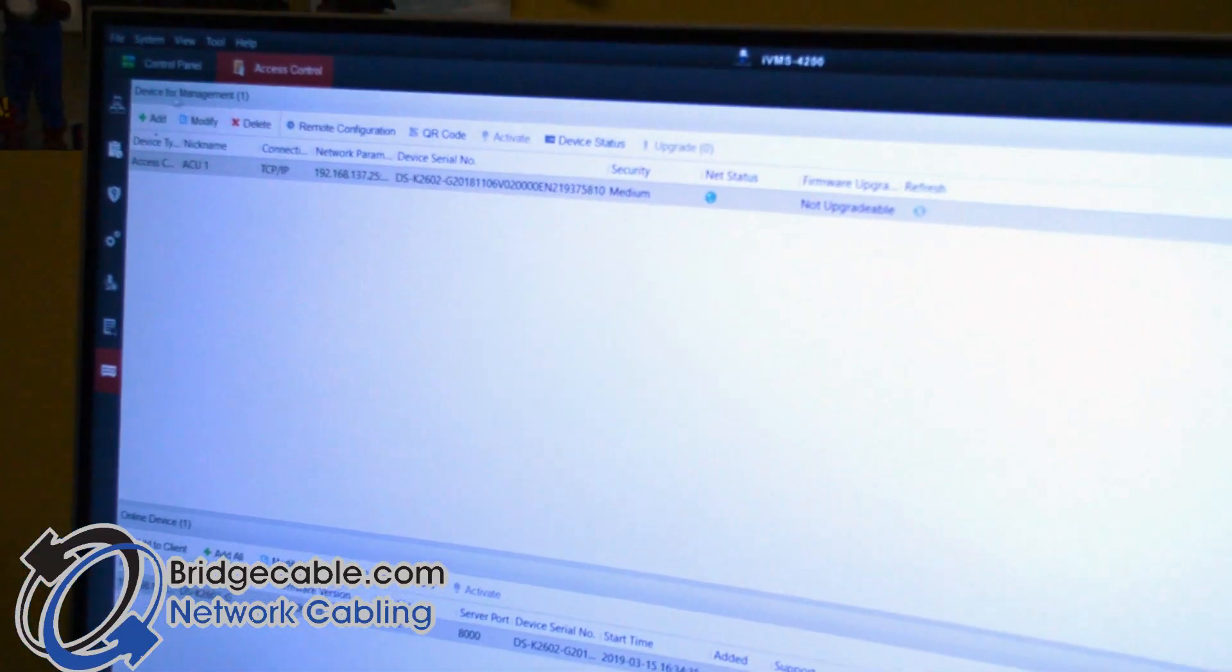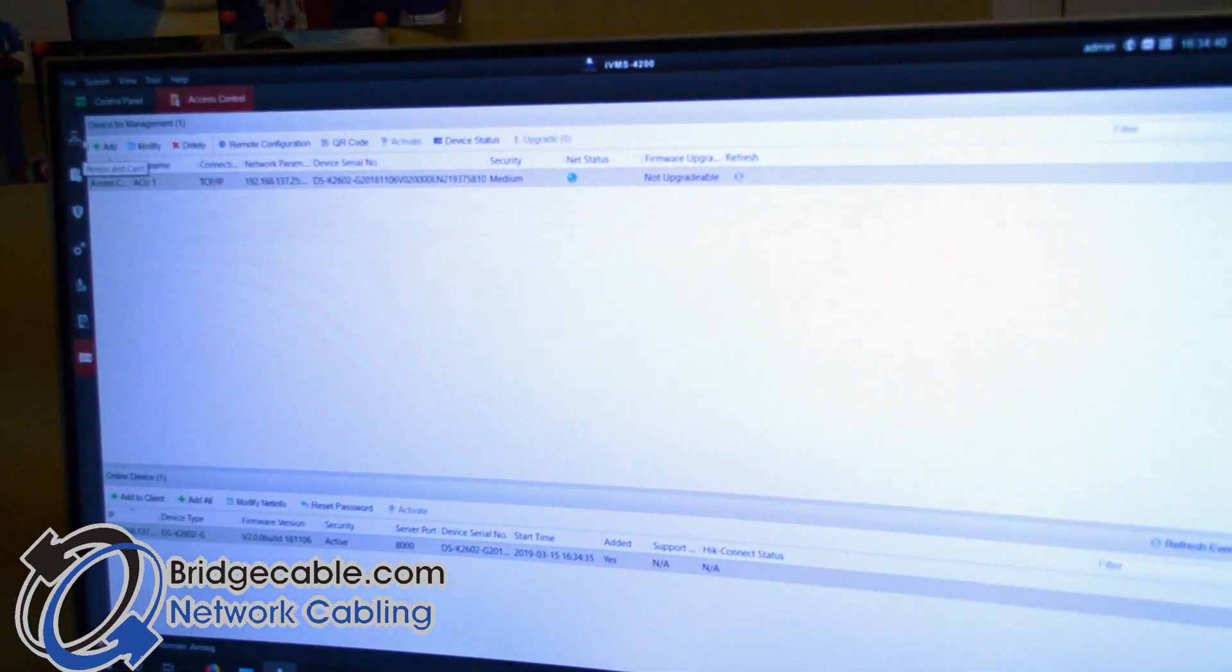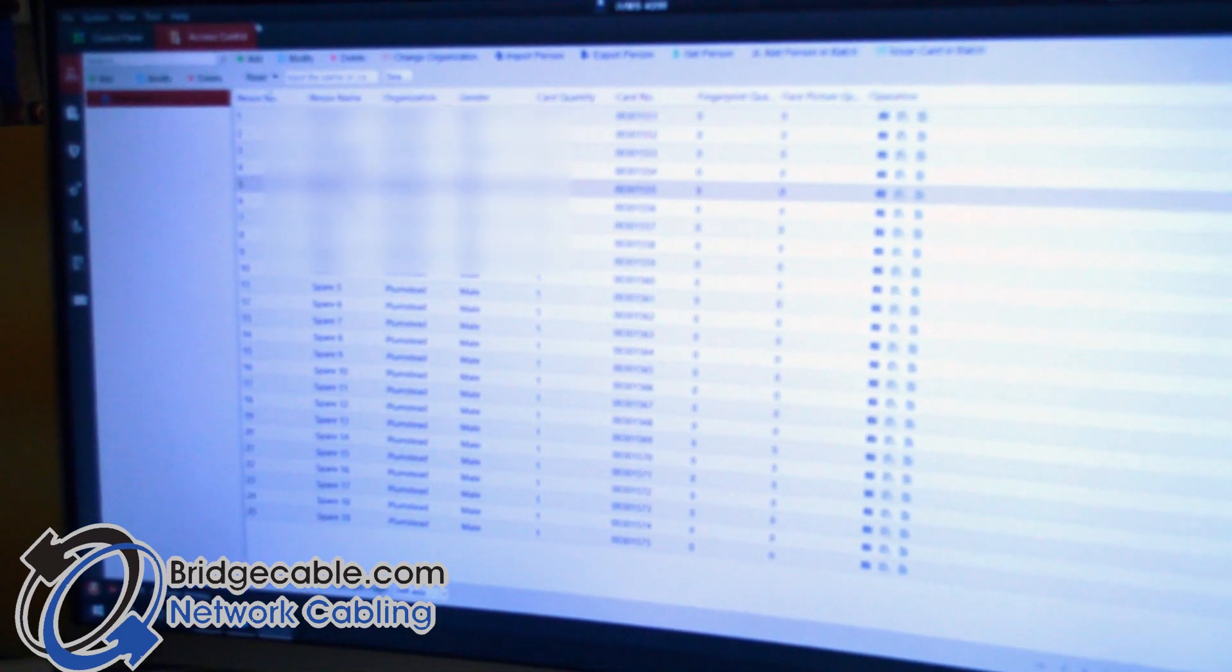Once you open that up, you get to this screen. You simply click on Access Control and that brings you right here. And then you click on this guy here at the left where it says Person and Card. Simple enough. And then right here, you just, right at the top here, you just hit Add.